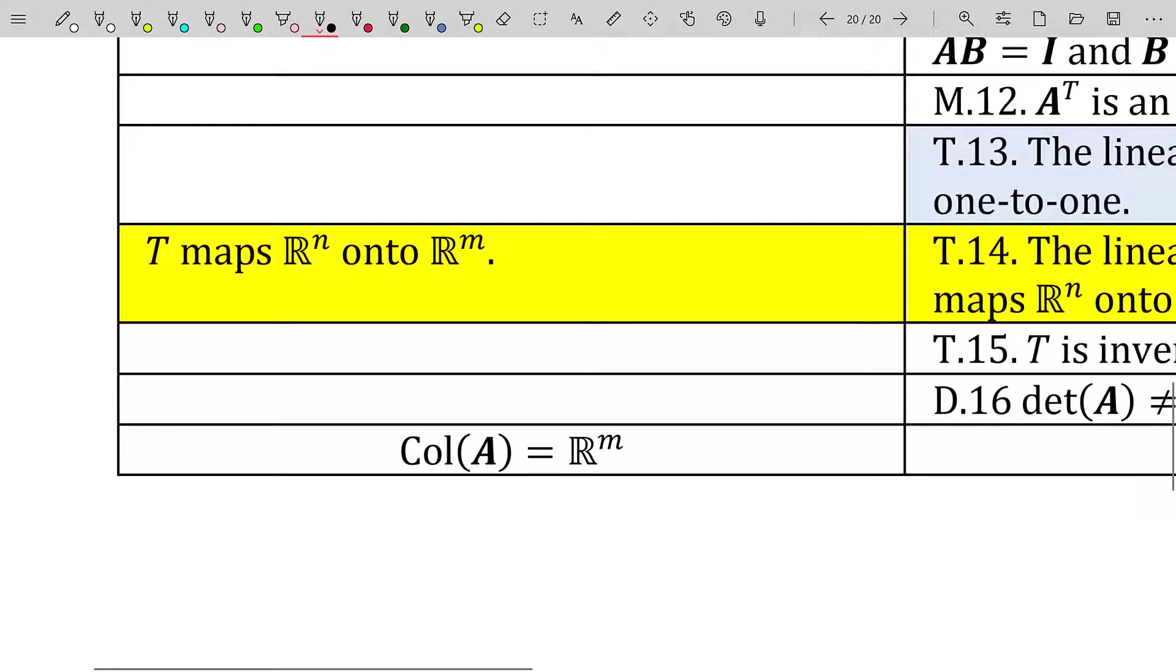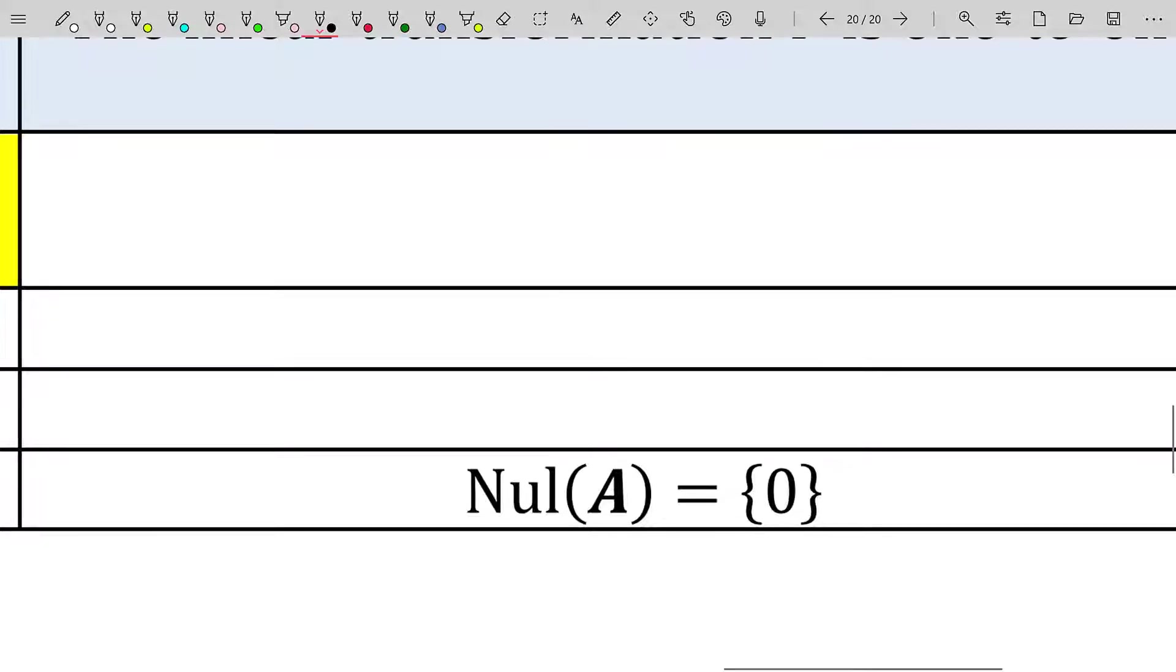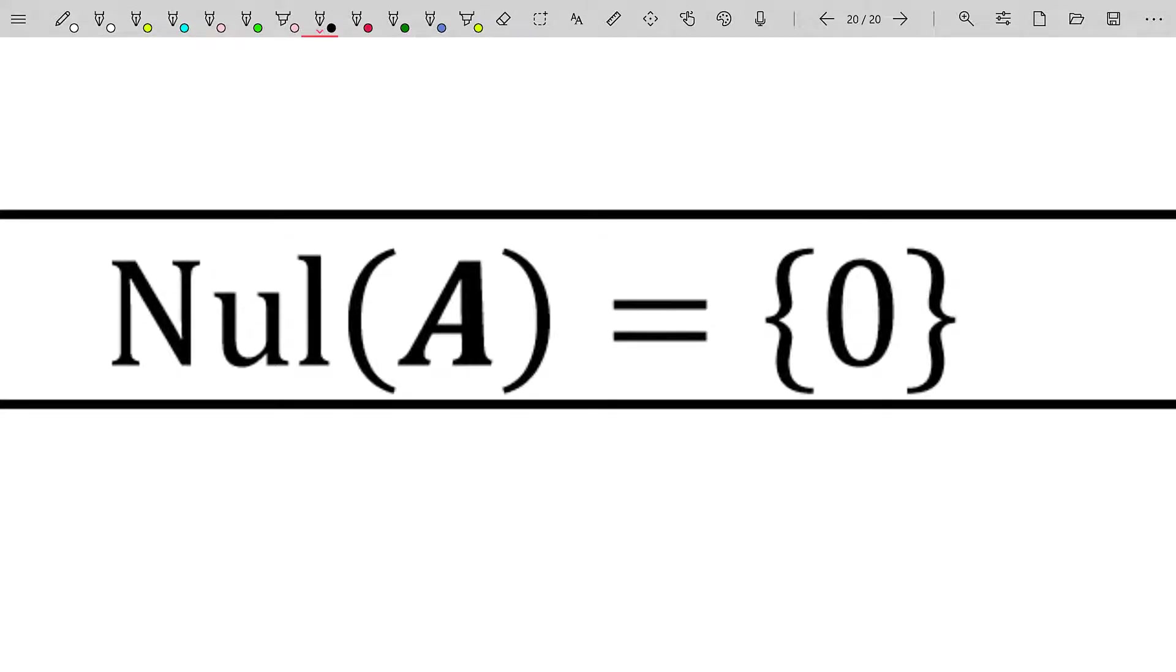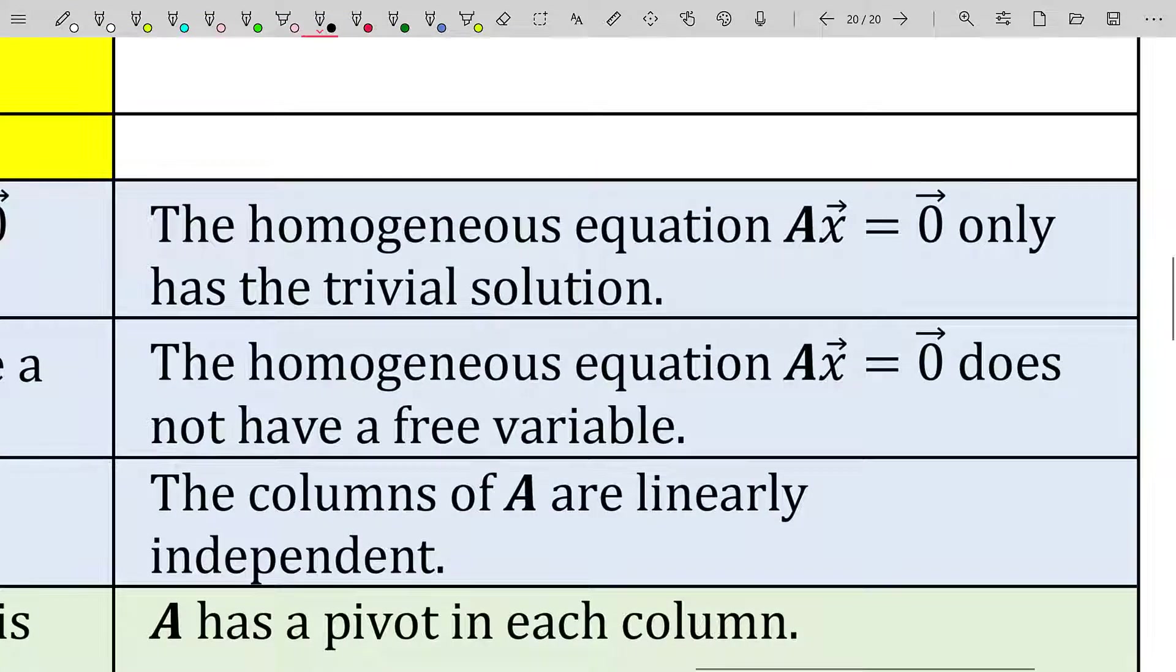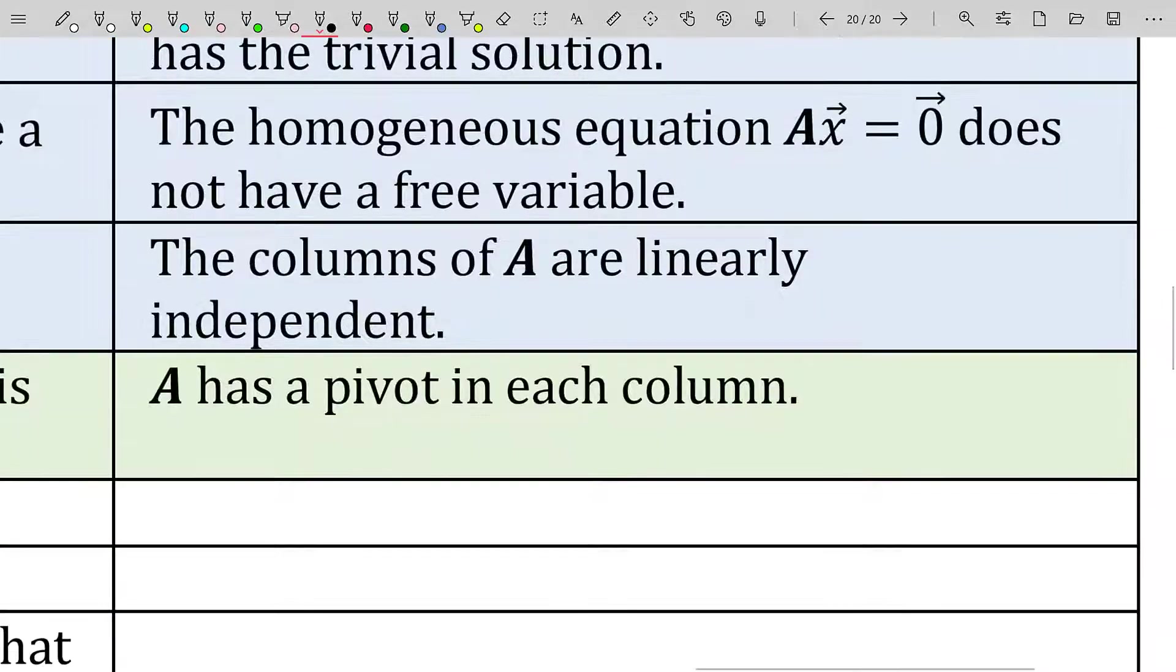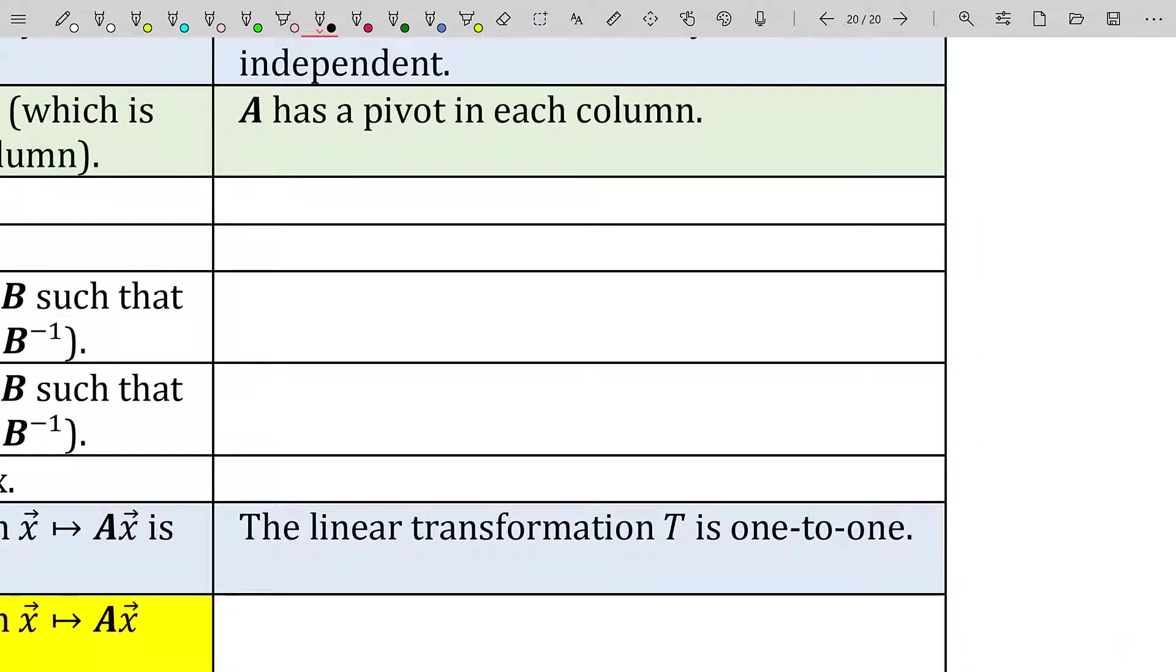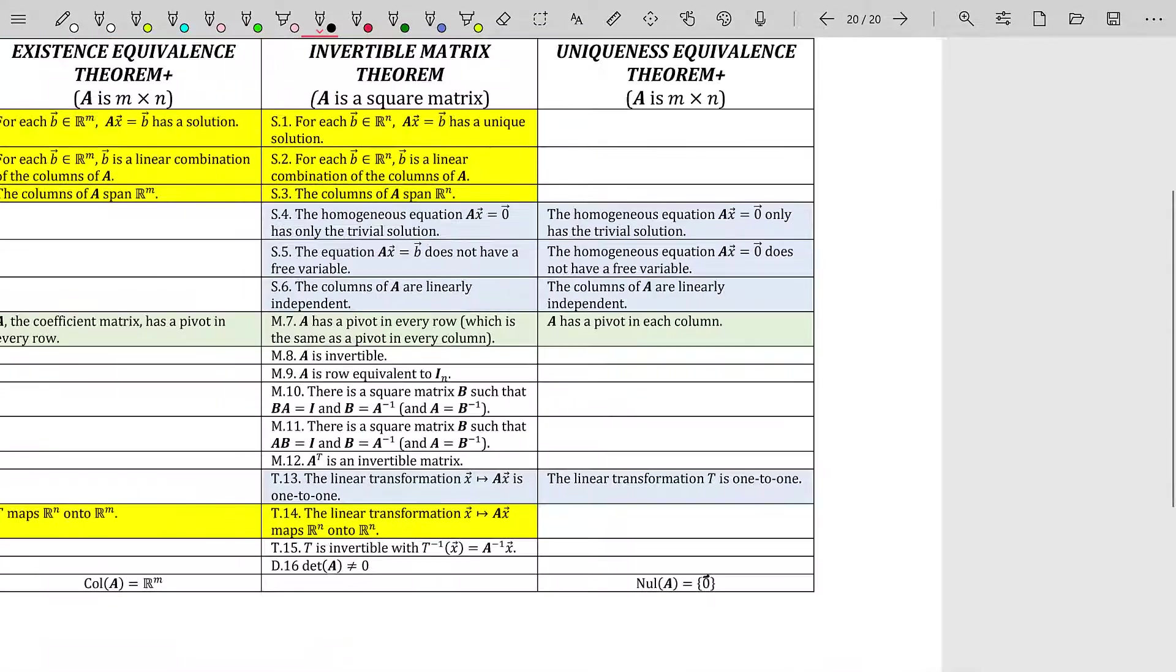And I've modified the table to include that below. There's something very similar about the null space of A. The null space of A is the set of all solutions to Ax equals zero. If the only solution to Ax equals zero is the zero vector itself, then the homogeneous equation only has a trivial solution. There's no free variable, the columns of A are linearly independent, A has a pivot in each column, and the linear transformation T based on A is one-to-one. All of these are equivalent statements. I'm just adding to them as I move forward.